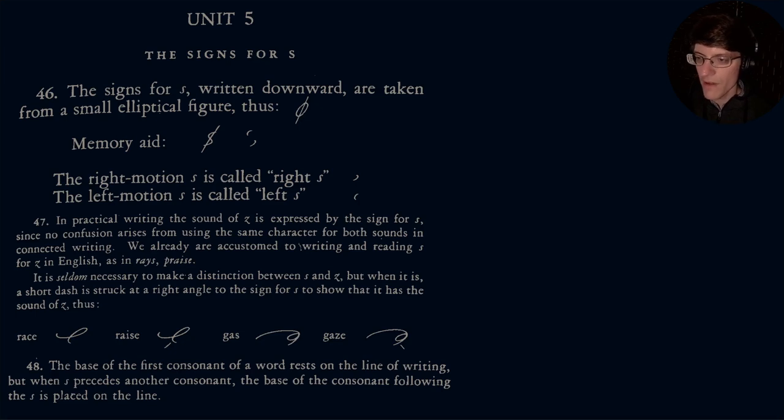Unit 5, the signs for S. The signs for S written downward are taken from a small elliptical figure. By that, they mean that if you were to draw the shape, that's the elliptical figure.